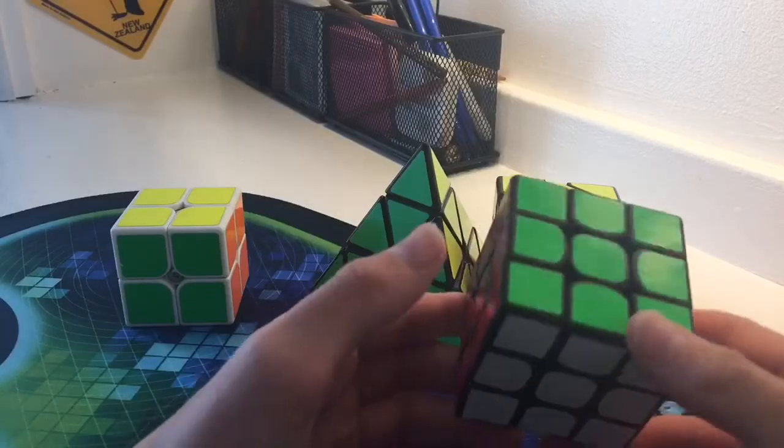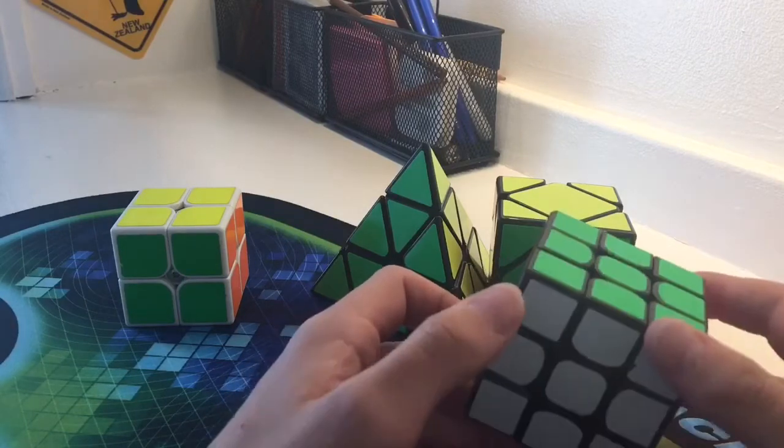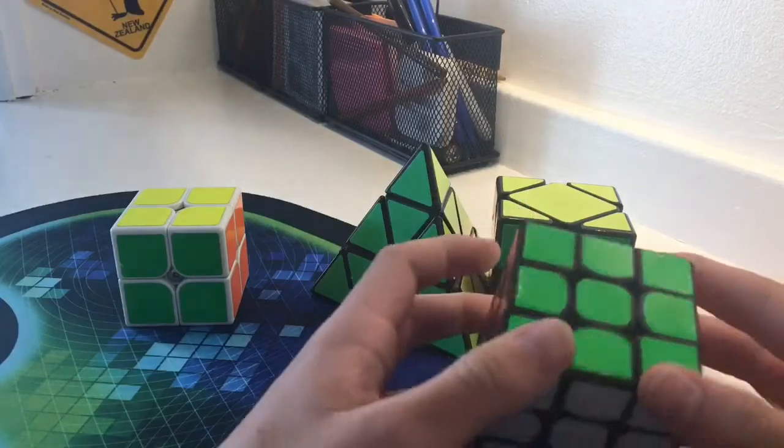And for 3x3, I use the Valk M that my friend magnetized. I average around 16 seconds, usually low 16. I hope to get a sub-16 average at Nats.